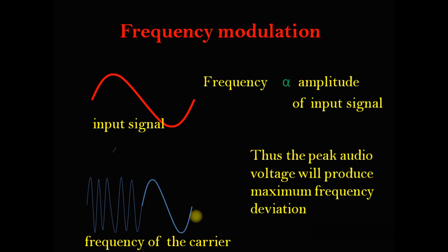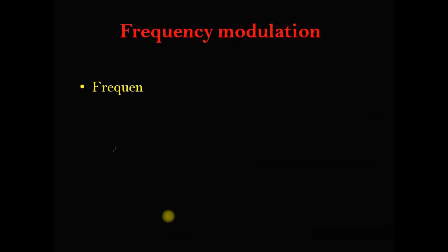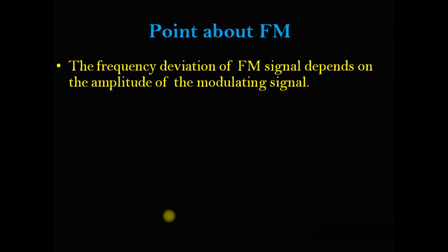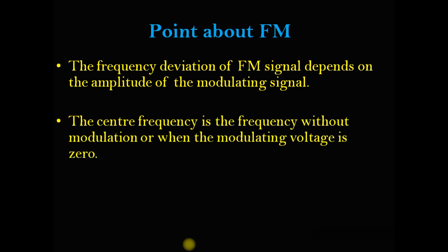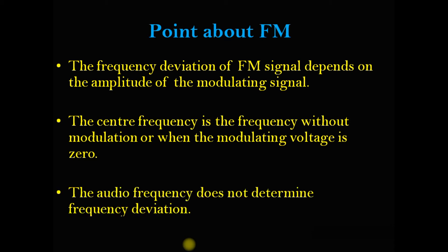From this, what we can observe is that the frequency of the carrier signal is directly proportional to the amplitude of the input signal. Key points to bear in mind: the frequency deviation of the FM signal depends on the amplitude of the modulating signal, and the central frequency does not change without a modulating signal. The audio frequency does not determine the frequency deviation.